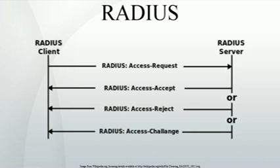Finally, when the user's network access is closed, the NAS issues a final accounting stop record — a RADIUS accounting request packet containing an ACCT status type attribute with a value of 'stop' — to the RADIUS server, providing information on the final usage in terms of time, packets transferred, data transferred, reason for disconnect, and other information related to the user's network access. Typically, the client sends accounting request packets until it receives an accounting response acknowledgement, using some retry interval. The primary purpose of this data is that the user can be billed accordingly. The data is also commonly used for statistical purposes and for general network monitoring.